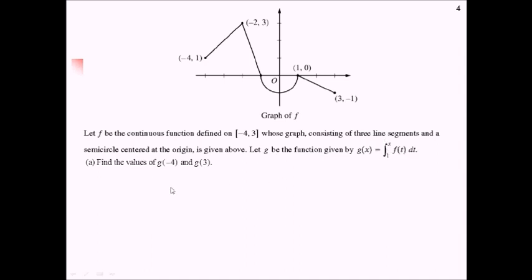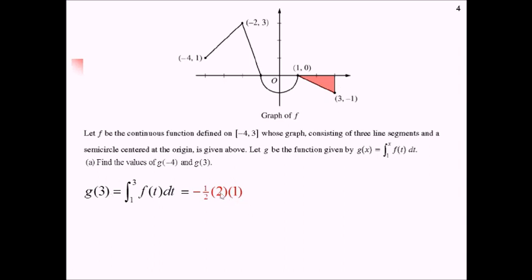Based off of this, see if you can figure out the values of g of negative 4 and g of 3. I'm going to do g of 3 first because that's the easier of the two. For g of 3, we're plugging 3 in for x, so we're doing the integral from 1 to 3 of f of t dt, which means we're finding the area under the curve of f on the graph. Going from 1 to 3, we have a triangular shape that's also under the x-axis, so that's going to be negative area: negative 1/2 times a base of 2 times a height of 1, which ends up being negative 1.